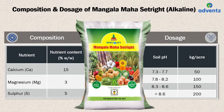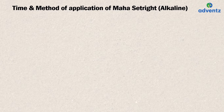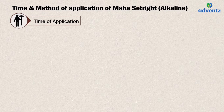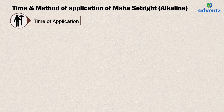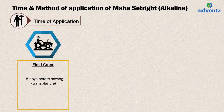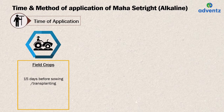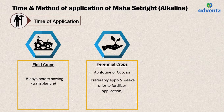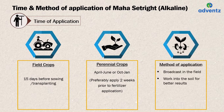Regarding time of application: pH correction should be done before application of fertilizers. Mangala Mahasatrite alkaline should be applied 15 days before sowing or transplanting for annual crops. For perennial crops, where fertilizers are applied in split doses before and after monsoon, Mangala Mahasatrite alkaline should be applied once, 15 days or 2 weeks prior to fertilizer application. It should be ensured that Mangala Mahasatrite alkaline comes in contact with soil particles in order to get better results.